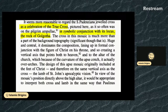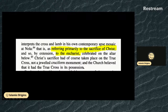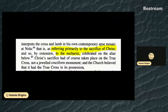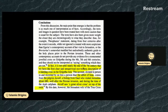In view of the mosaic's position directly above the high altar, it would be appropriate to interpret both cross and lamb in the same way that Paulinus interprets the cross and lamb in his own contemporary apse mosaic at Nola — that is, as referring primarily to the sacrifice of Christ and by extension to the Eucharist celebrated on the altar below. Christ's sacrifice had of course taken place on the true cross, not a dual cruciform monument. The church believed it had the true cross in its possession, so the argument is that it's merely a symbolic representation and not a reference to a real, monumental cross in Jerusalem.